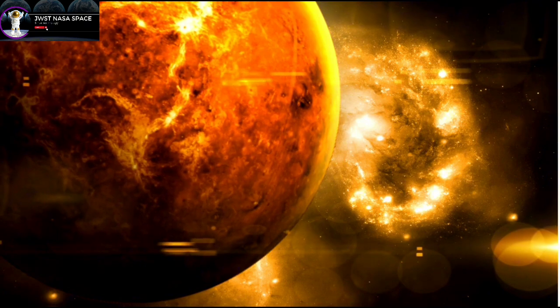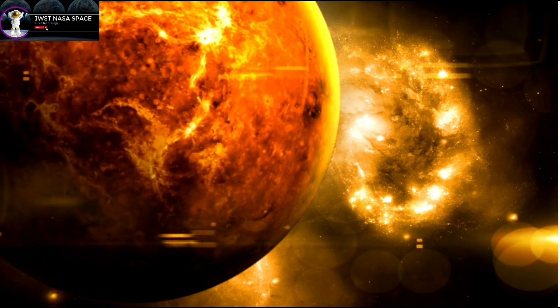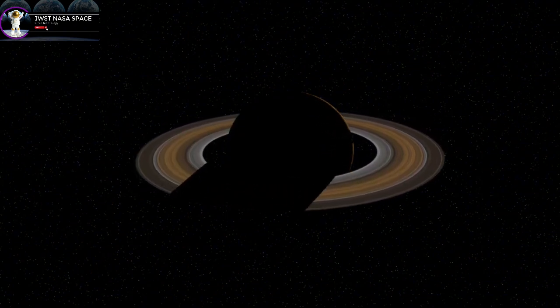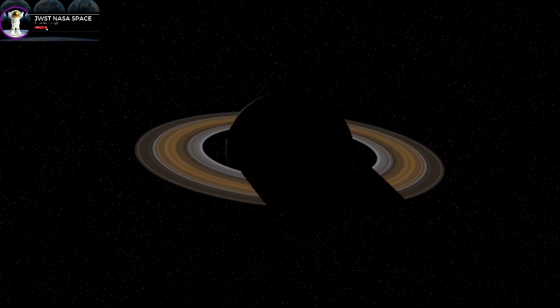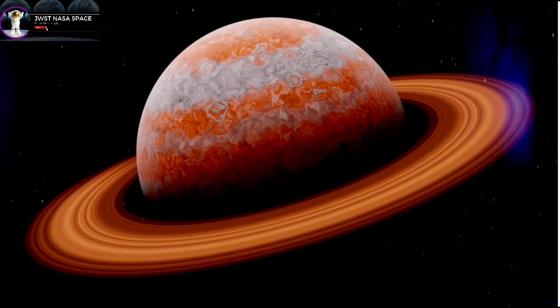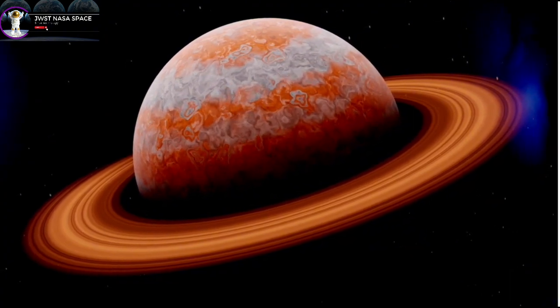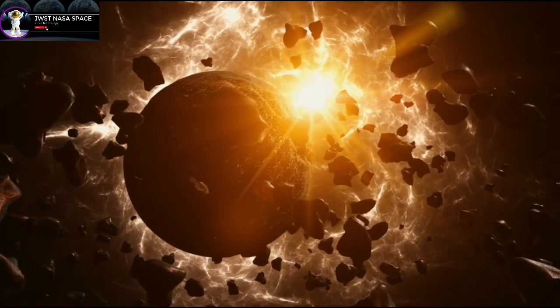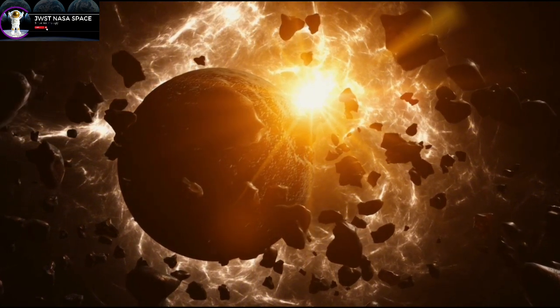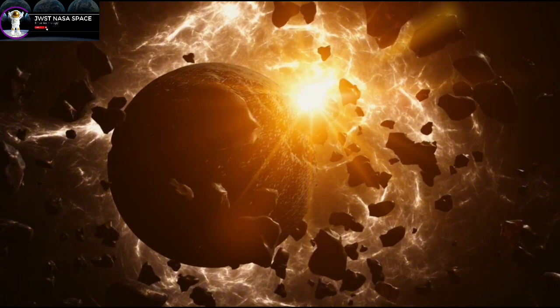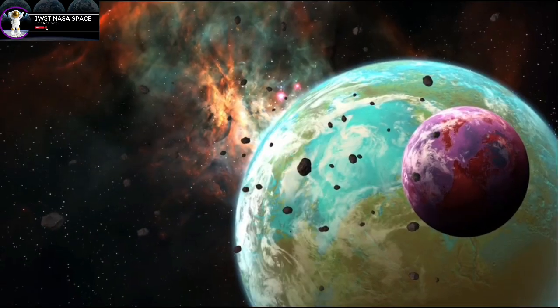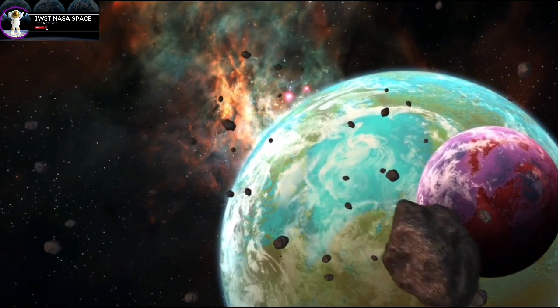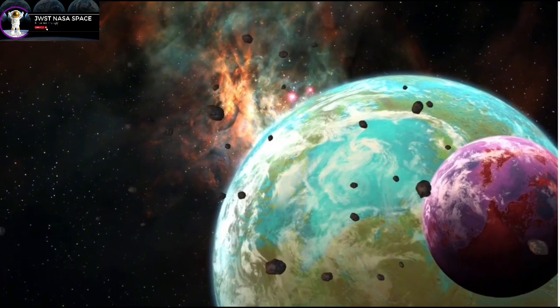Another fascinating aspect of Proxima b is its orbit and rotation. Its year lasts only 11.2 Earth days, meaning it orbits its star much closer than Earth does to the sun. This tight orbit places it in what is known as the habitable zone, or the Goldilocks zone of Proxima Centauri—a region where conditions might be just right for liquid water to exist on the surface.